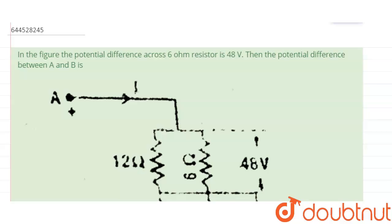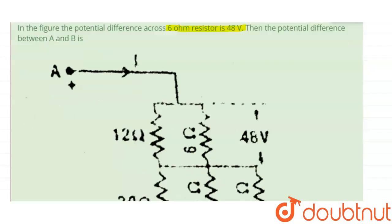Hello everyone. The question is: in the figure, the potential difference across the 6 ohm resistor is 48 volts. Then the potential difference between A and B is?